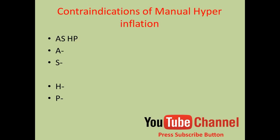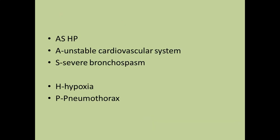Contraindications of manual hyperinflation — the mnemonic is AS HP, like Hewlett Packard. A stands for unstable cardiovascular system, S for severe bronchospasm, H for hypoxia, and P for pneumothorax. Revision: unstable cardiovascular system, severe bronchospasm, hypoxia, and pneumothorax.